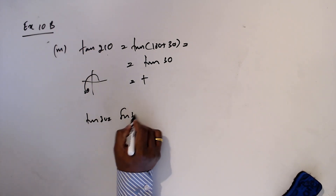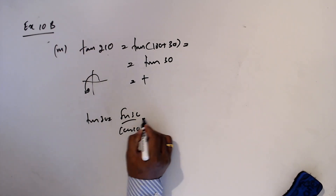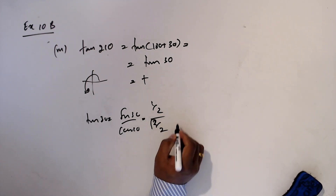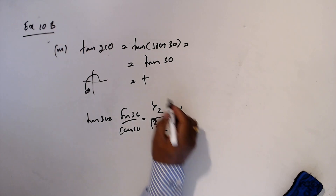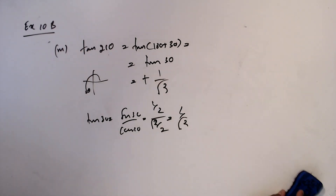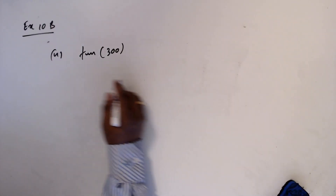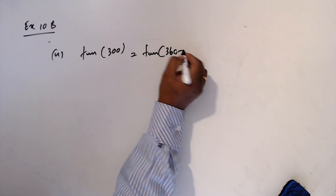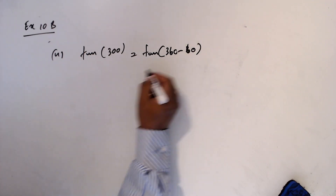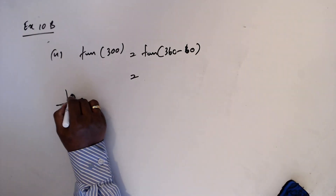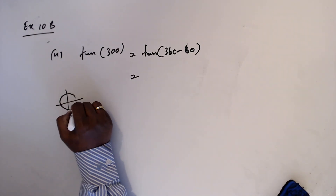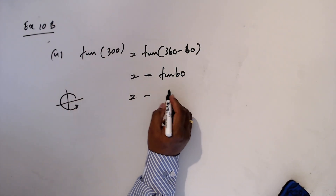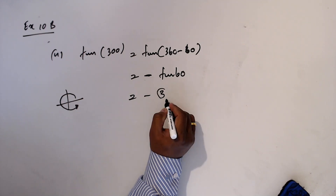Tan 210 equals tan(180 plus 30), which is in the third quadrant where tan is positive. So the answer is positive tan 30. Tan 30 means sine 30 divided by cos 30: one half divided by square root 3 over 2, which equals 1 over square root 3.